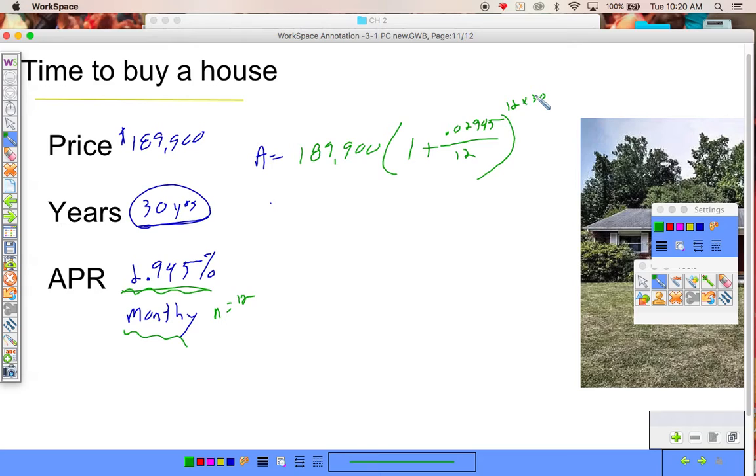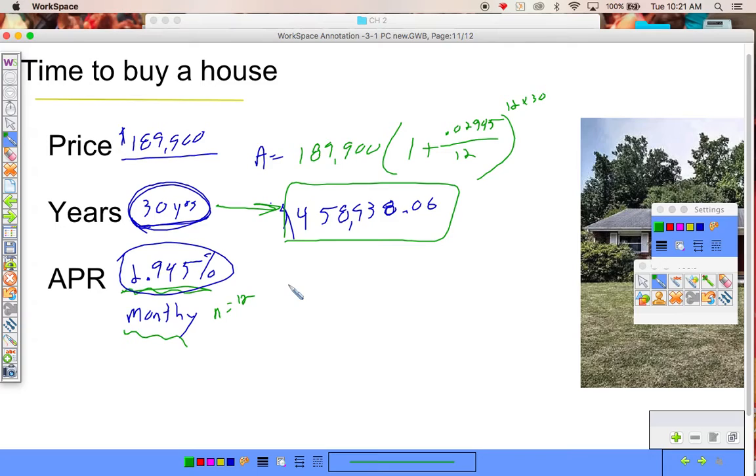So we're going to plug into the calculator. I'm going to make sure I plug it in right. Looks good to me. So if I wait 30 years and I go to the bank with my checkbook and say, all right guys, how much do I owe you? They're going to say you owe us $458,938.06. So with this interest rate, if I let that run for 30 years, and this is how much I paid for the house, or I supposedly bought it for, if I don't make a payment for 30 years, this is how much you're going to owe.